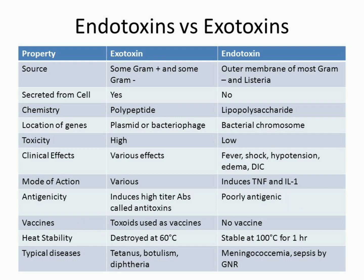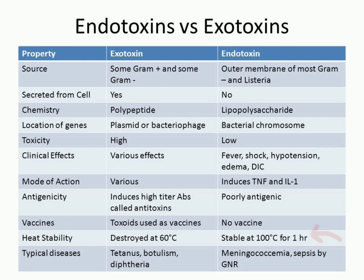The toxoid of exotoxin can be used as a vaccine; no toxoid or vaccine is available for endotoxin. Exotoxin is destroyed easily at 60 degrees Celsius, and endotoxin is stable at 100 degrees Celsius for one hour.